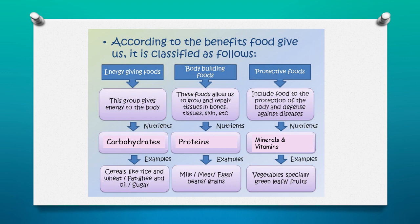Now let us take a look at protective food. Protective food includes food that gives protection to the body and also defends against diseases. The nutrients obtained from protective food are minerals and vitamins. We get minerals and vitamins from vegetables, especially green leafy vegetables, and also fruits.